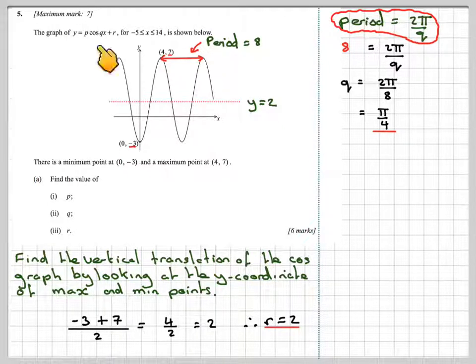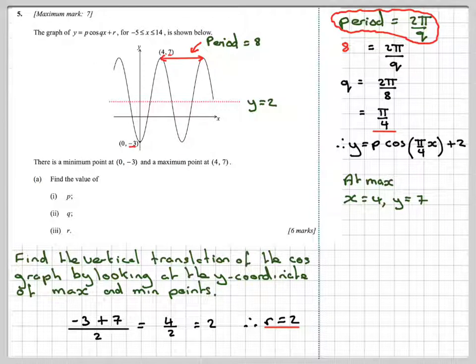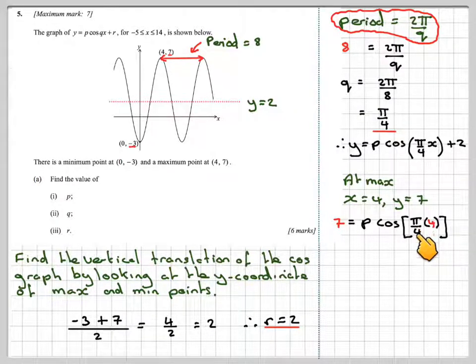Now if we write our function out, we've got y equals p cos of π by 4x plus 2. But we've got two points on the curve. Let's take the top one because it's all positive. At x equals 4, y is 7. So we'll put 7 in here and 4 in here.